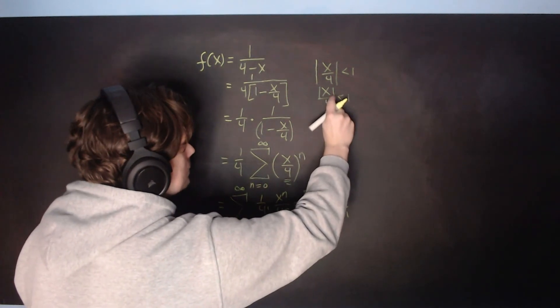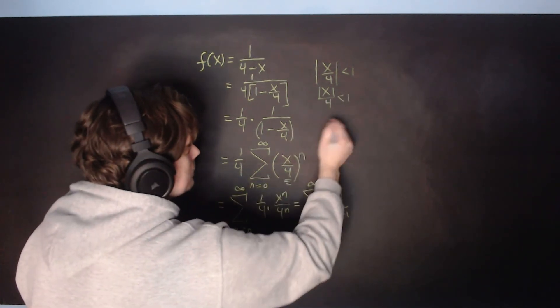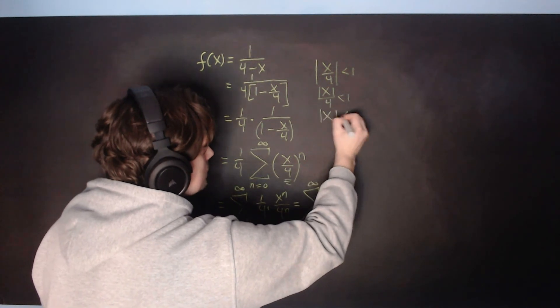This is the absolute value here. And then multiply by 4, so absolute value of x is then less than 4.